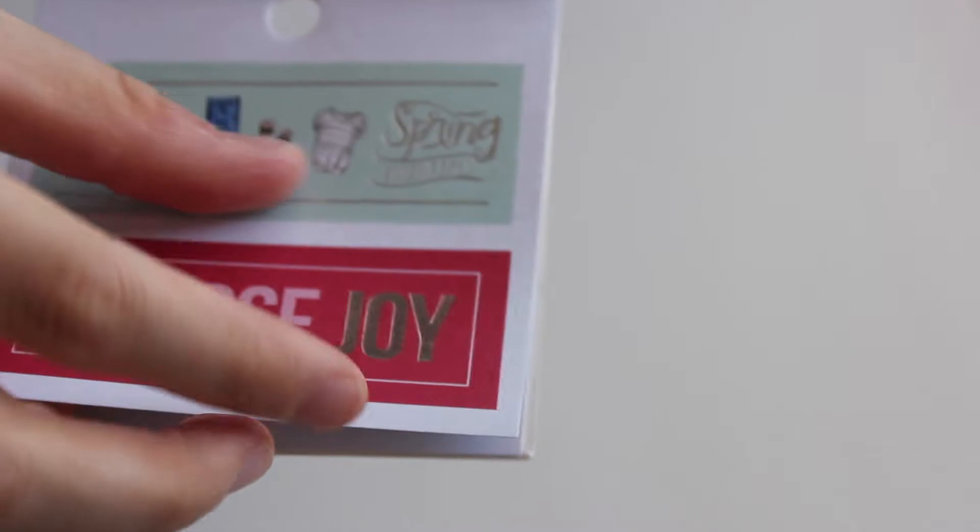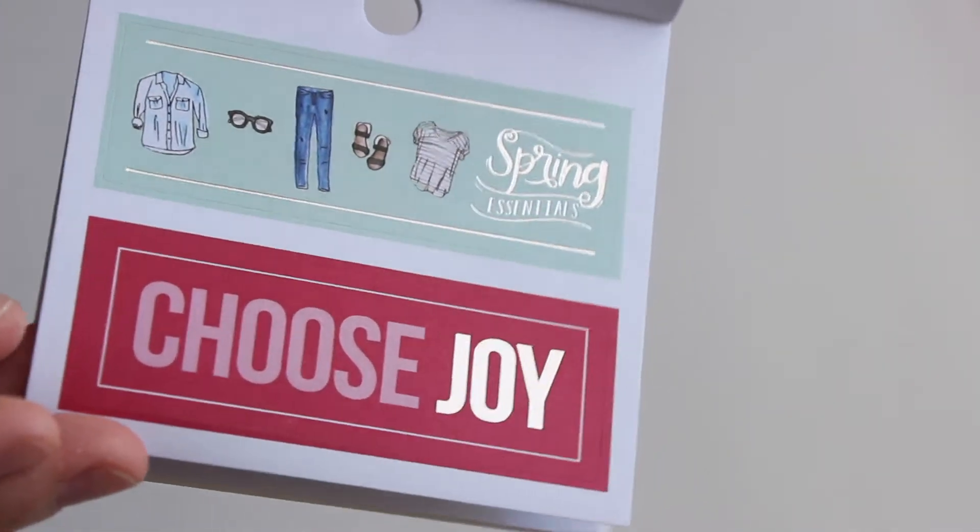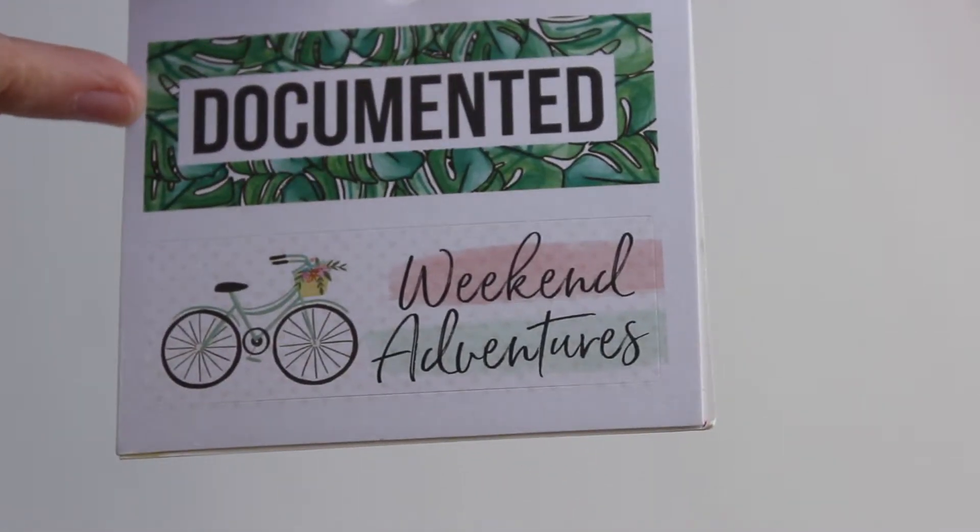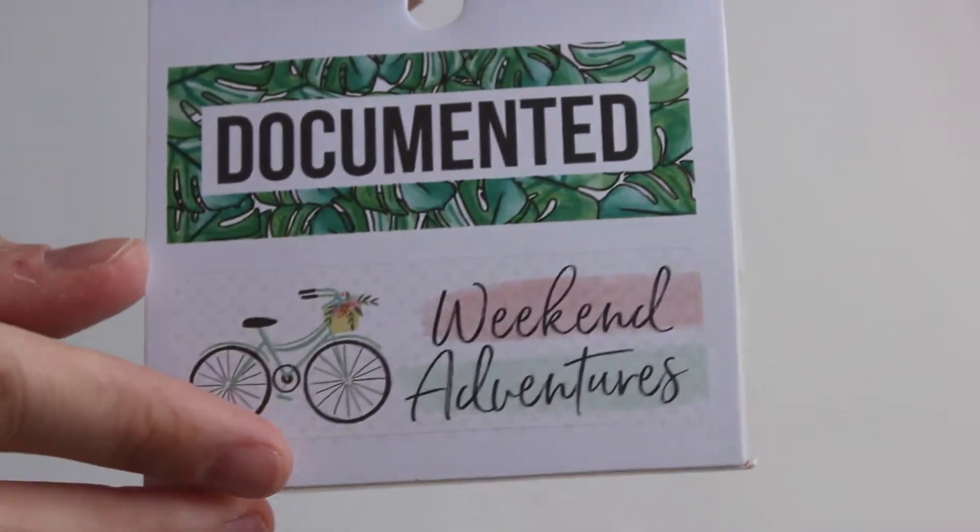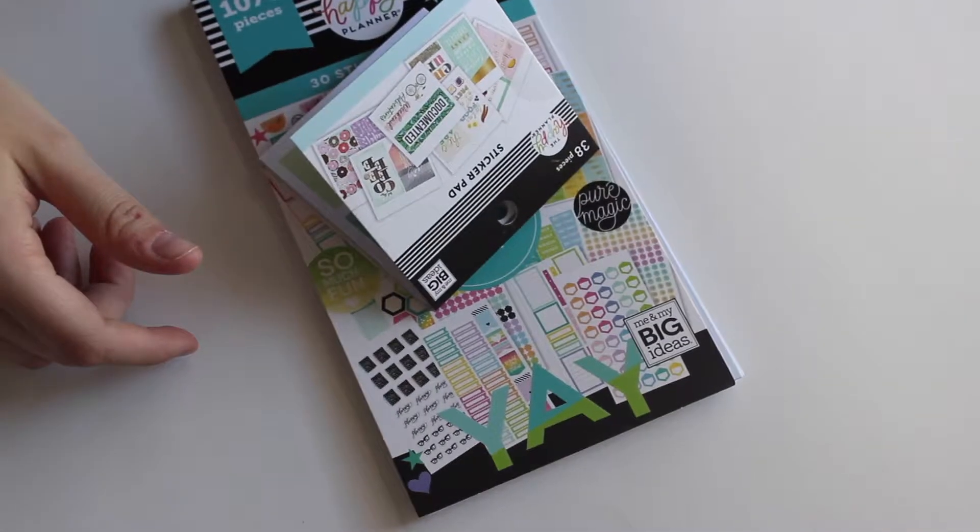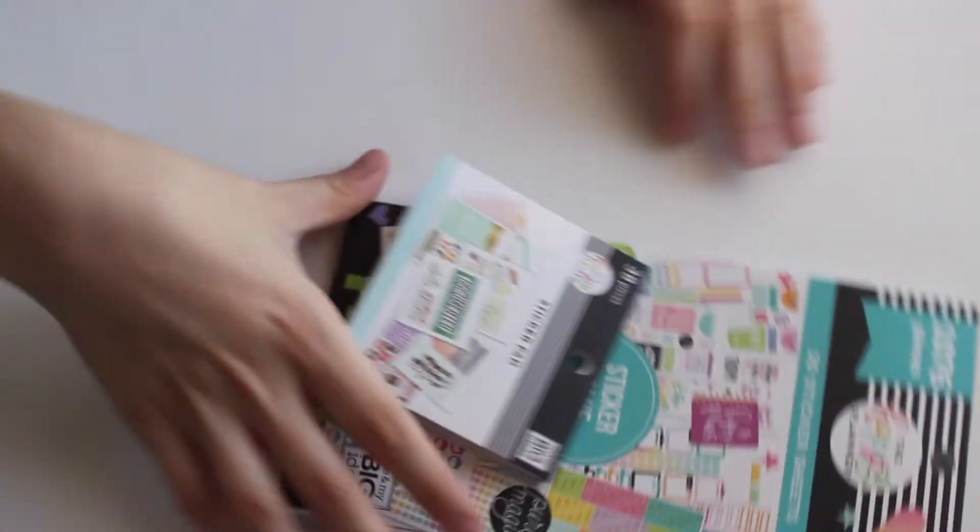Spring essentials is what this one says. Documented, weekend adventures. And that is the last page. So this is what comes in the Joann's exclusive box. There's tons of other stuff in there. I did an unboxing on my video yesterday.